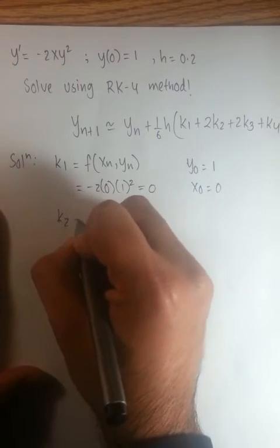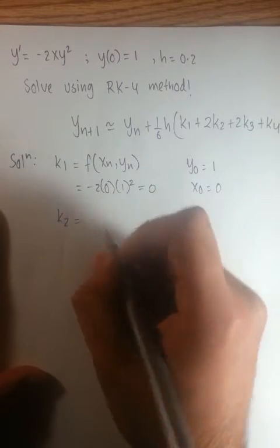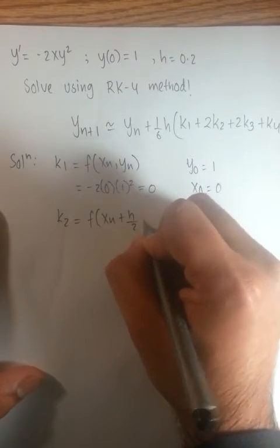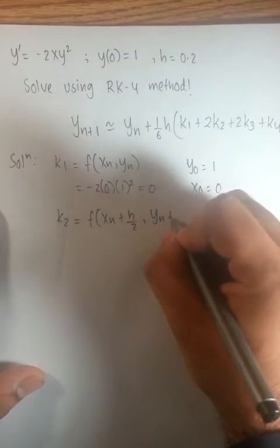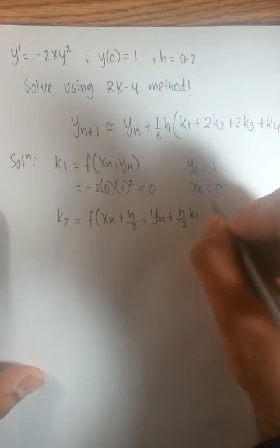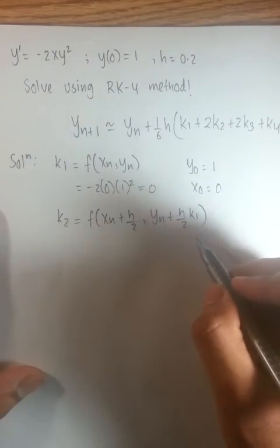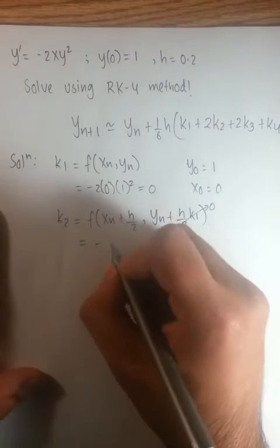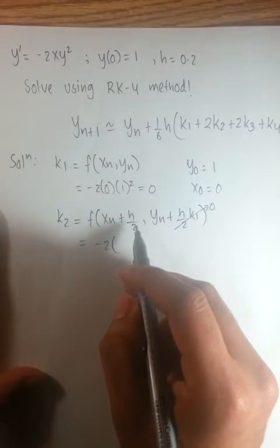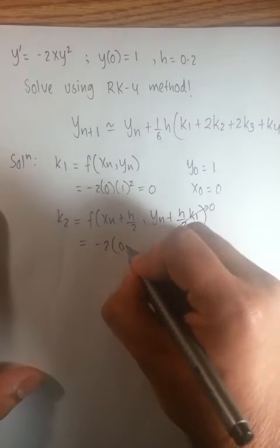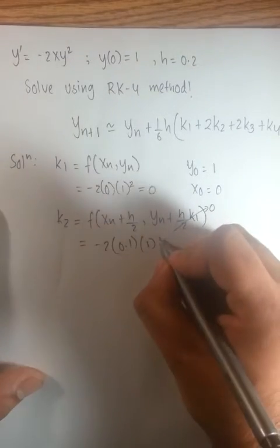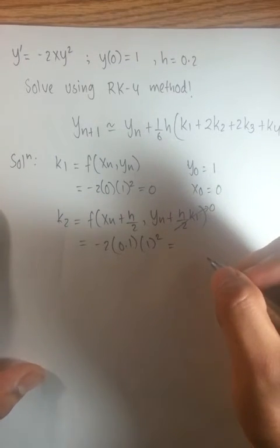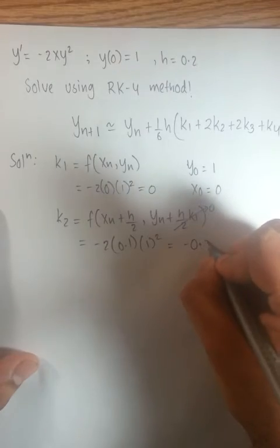So moving on to k2, k2 formula says function at xn plus half h, yn plus half h times k1. Now, we know that k1 value is 0, so you can just neglect this term and this becomes negative 2 times 0.1 times 1 squared. So your k2 value is just negative 0.2.